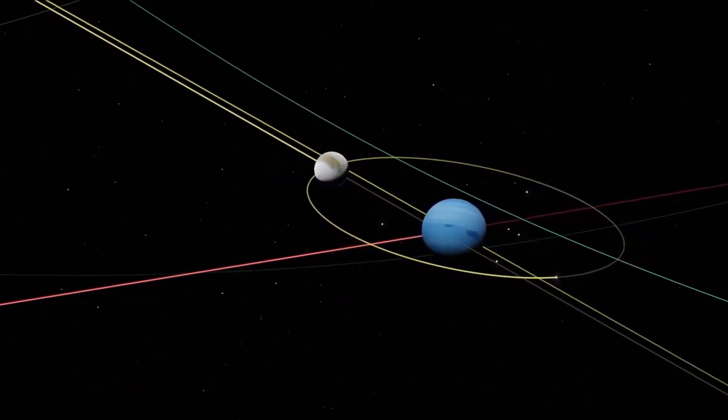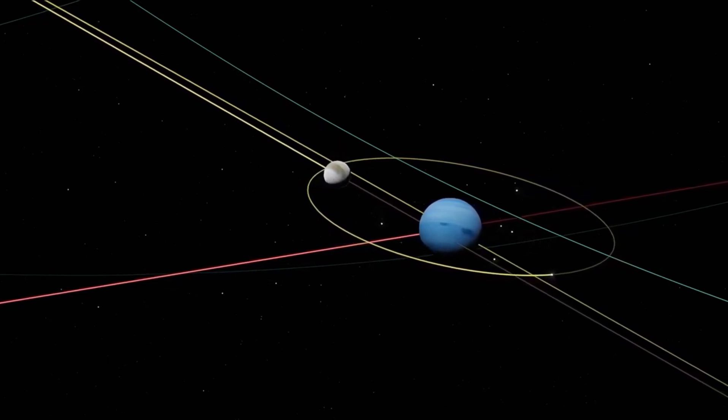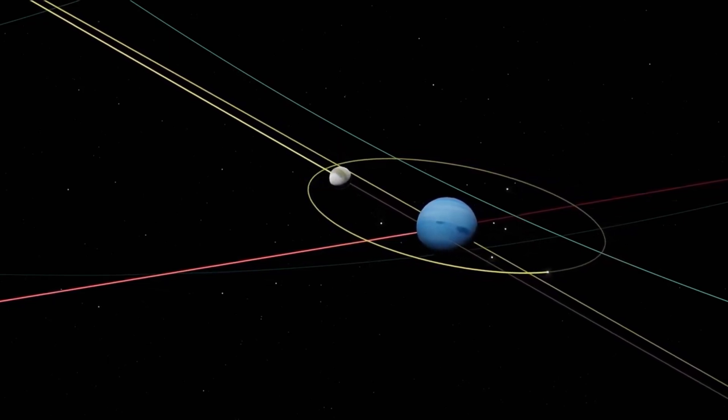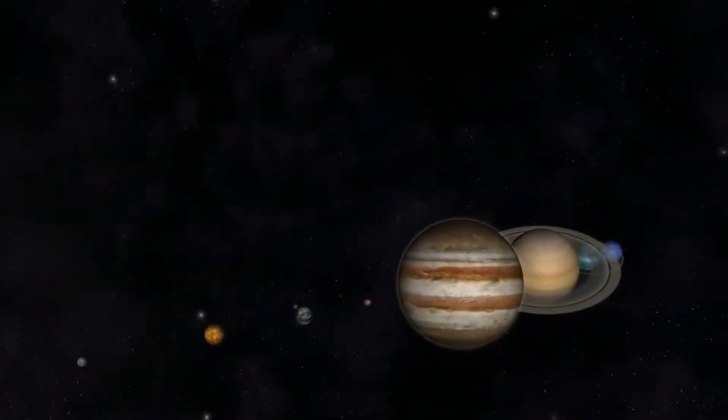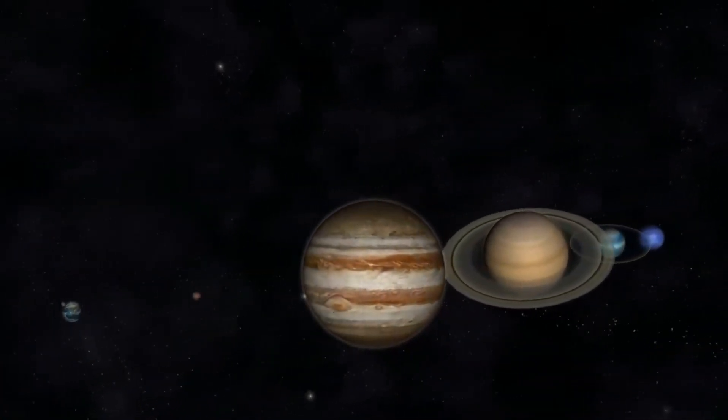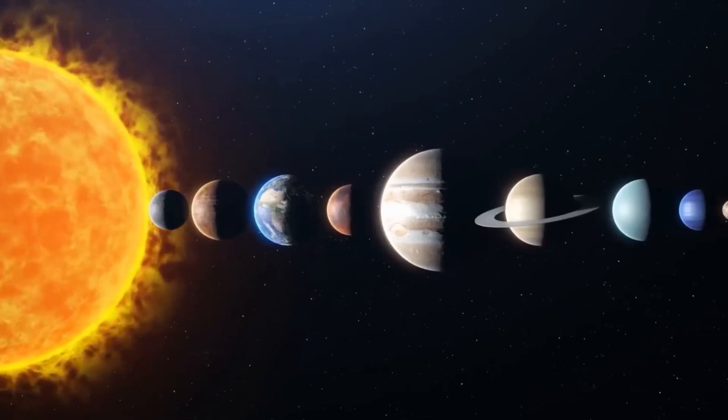The day the Earth smiled: another unique and incredible recording was made in 2013. In the shadow of Saturn, Cassini used a wide-angle camera to take a photo showing not only the Earth, but also Mars and Venus.